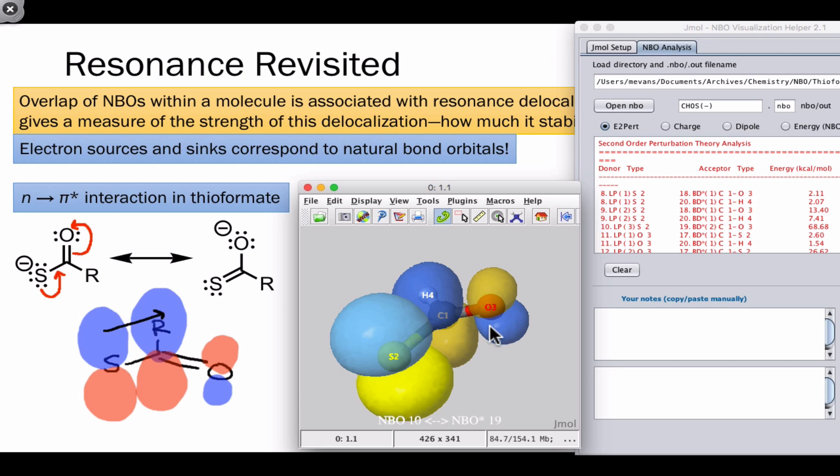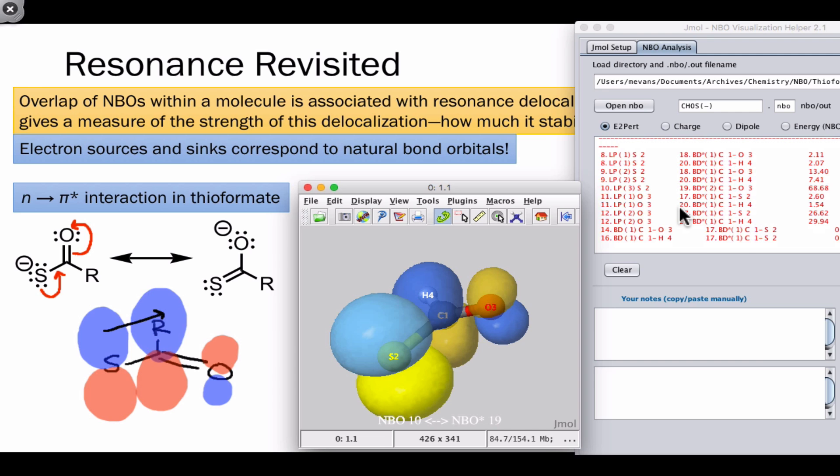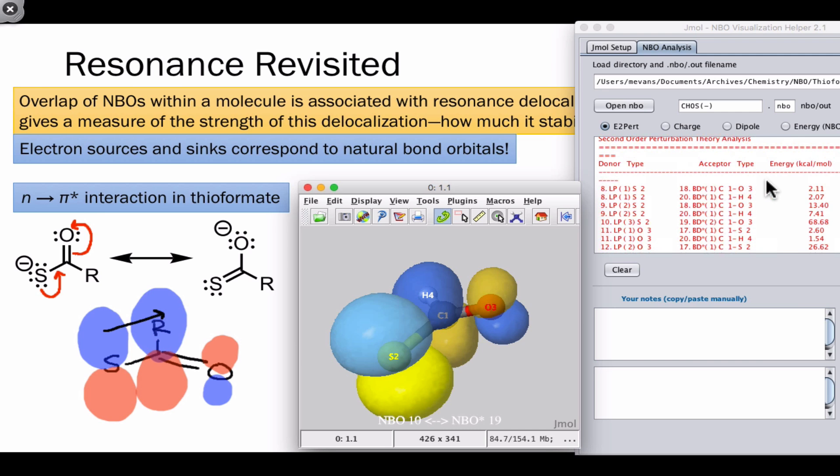Now one question that we can answer, now that we have the actual NBO calculation in front of us, is how important is this interaction to the overall structure of the molecule? Is the molecule mostly S-, or is it mostly O-? That depends to some extent on how stabilizing this interaction is.